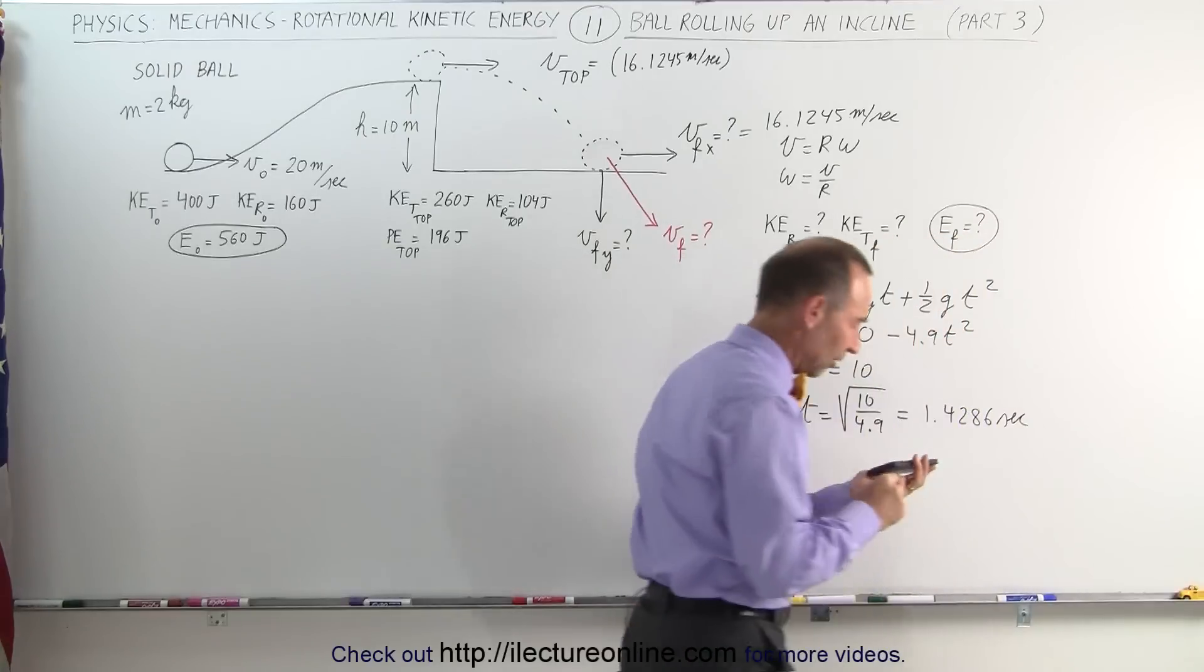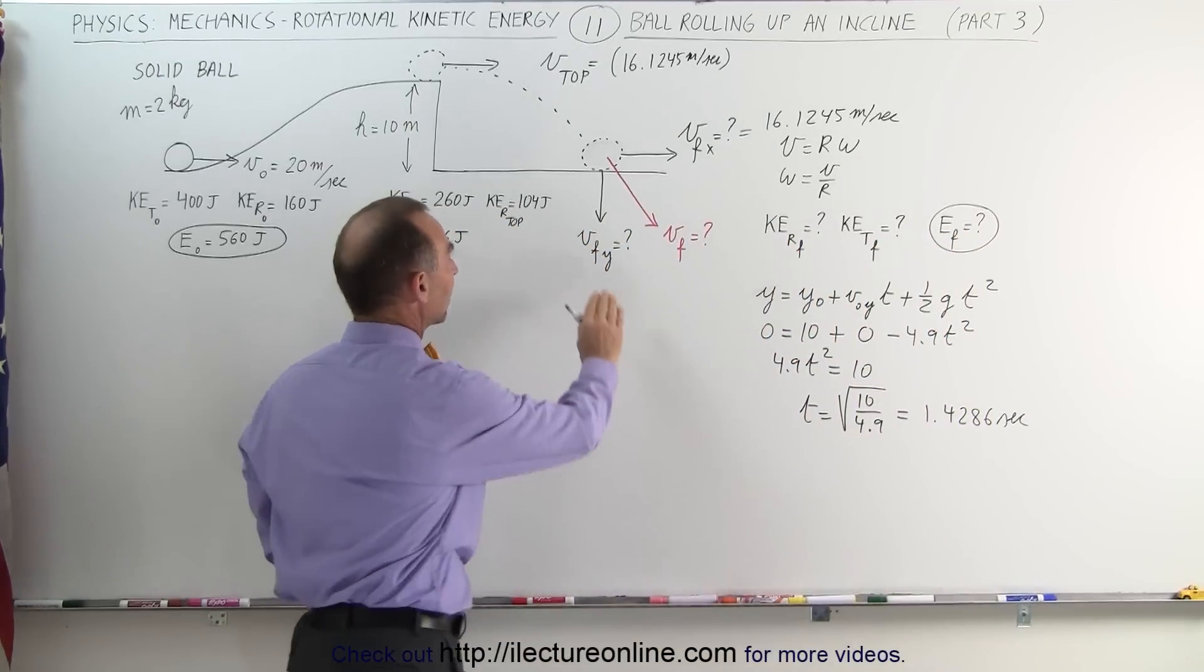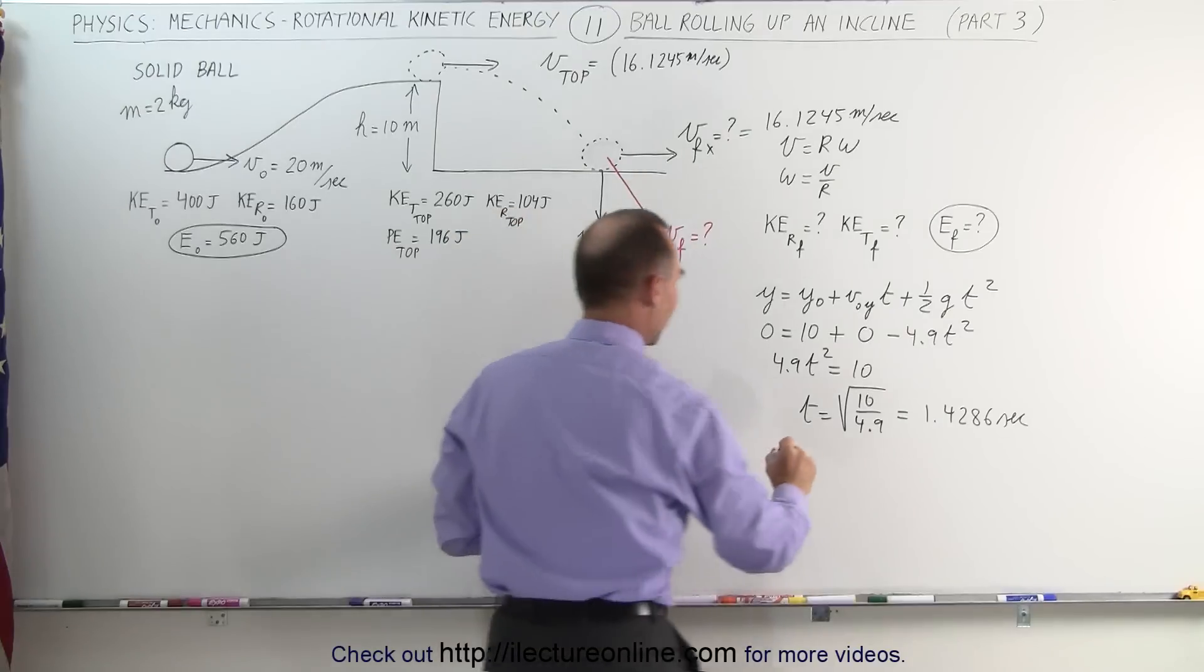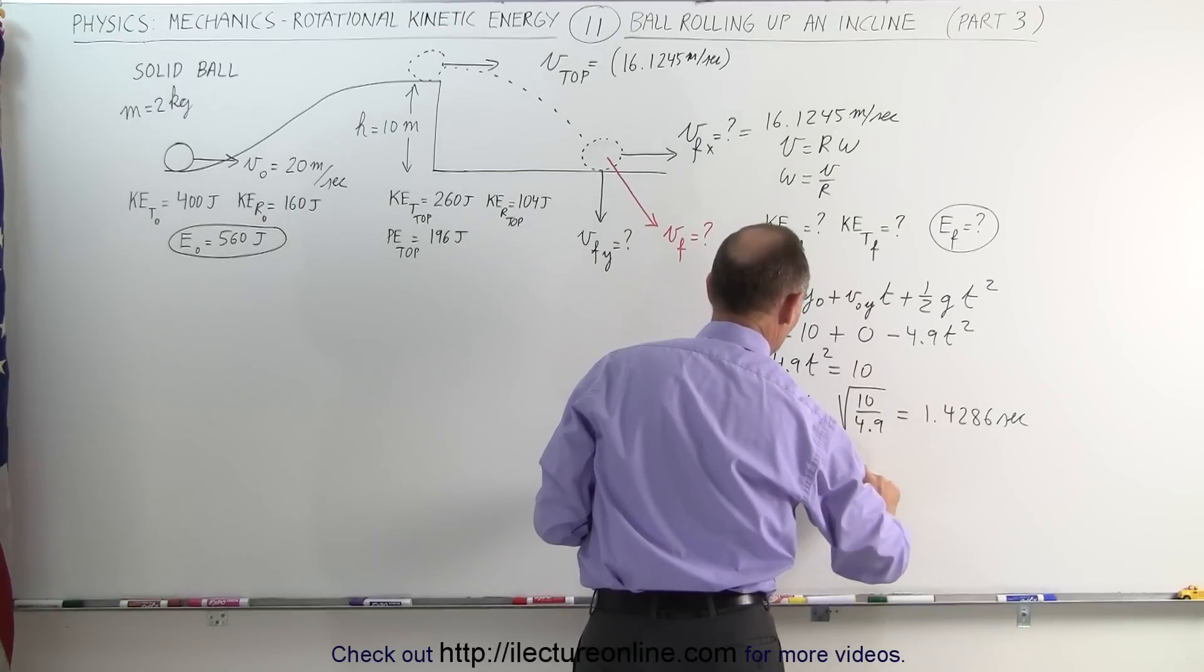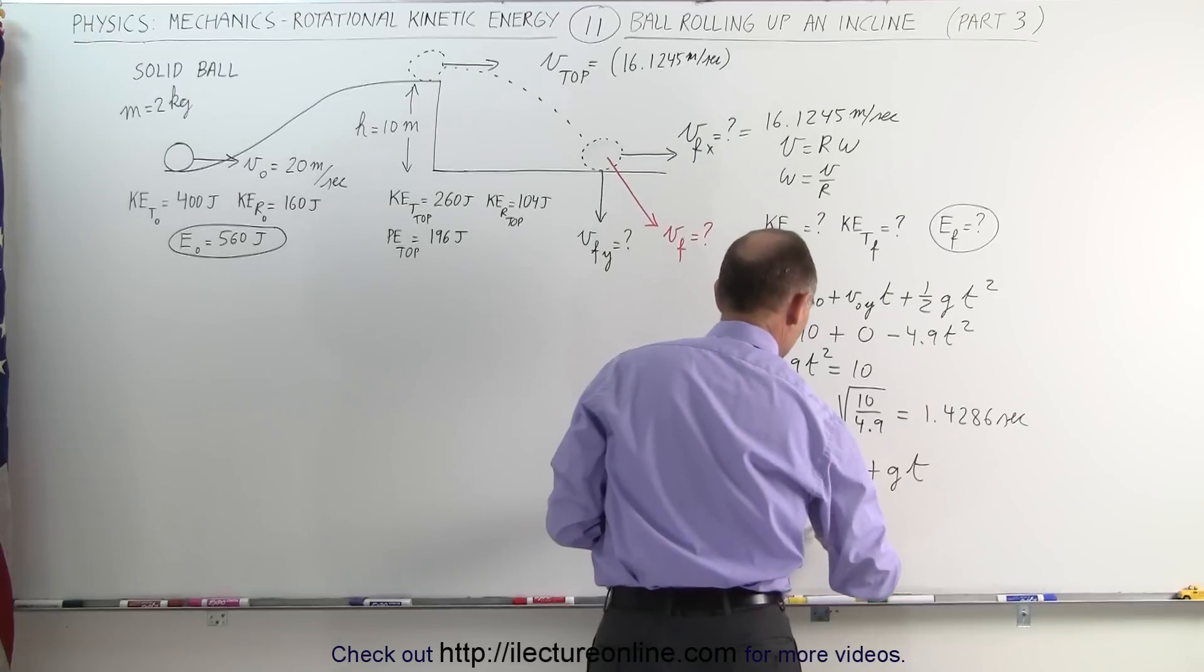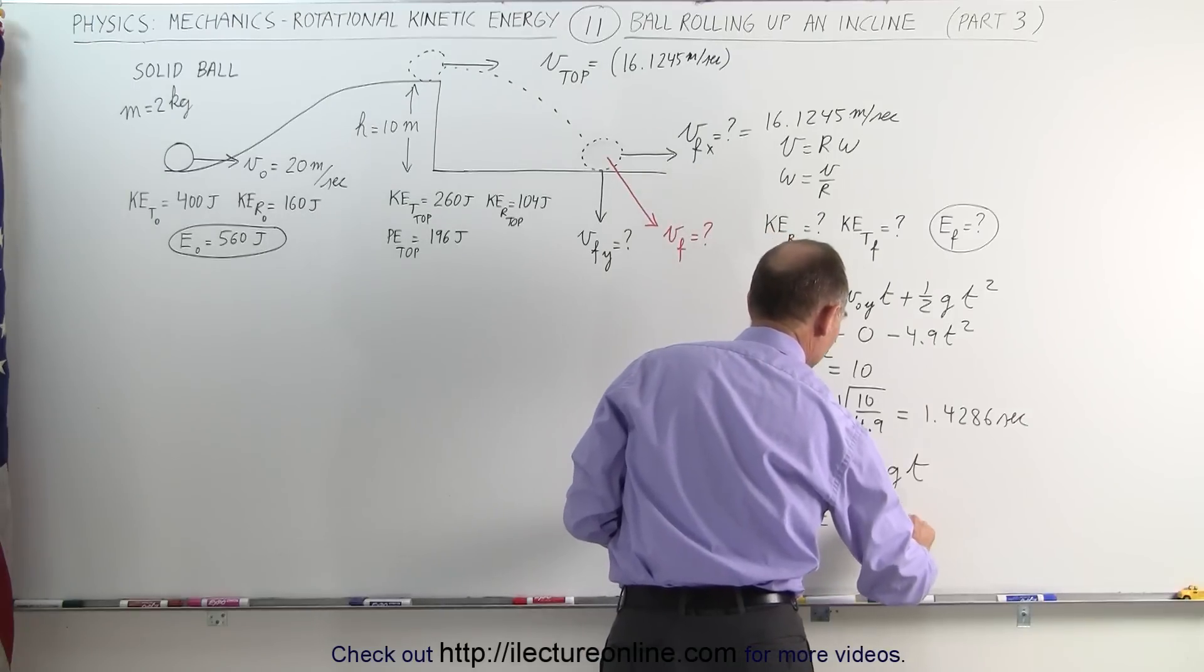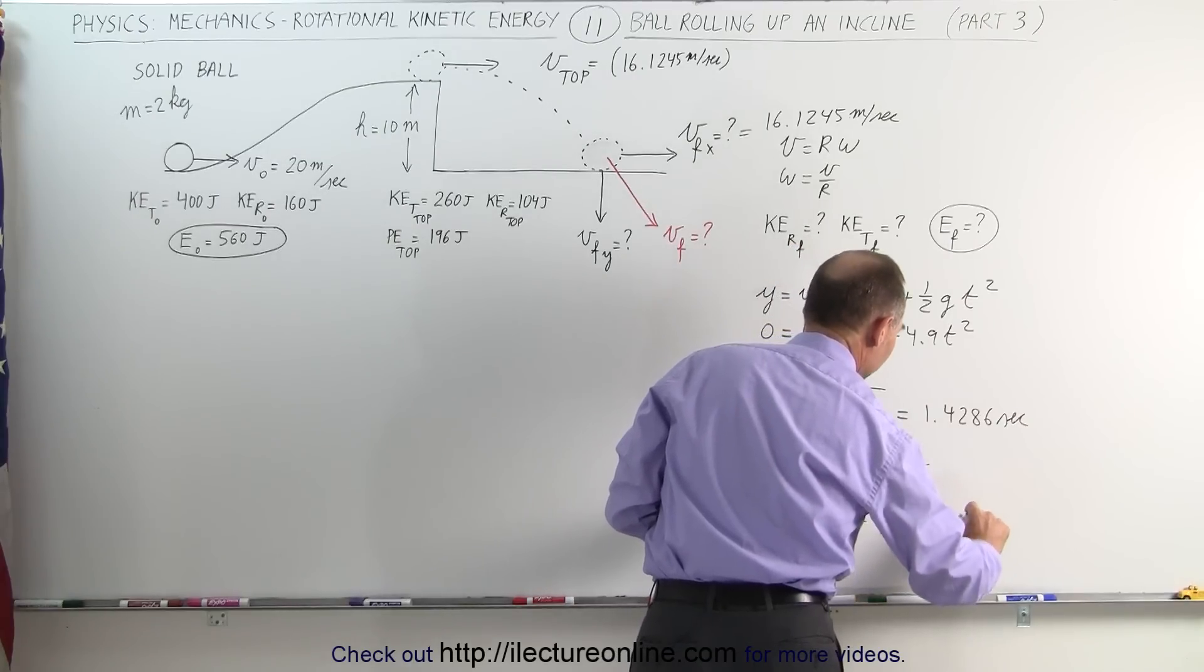Again, I keep a few extra figures there not to have a round-off error. Based upon that, we can now find the final velocity. V final in the y-direction is equal to v initial in the y-direction plus g times t. Well, this would be equal to 0 minus 9.8 times 1.4286.